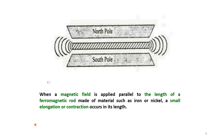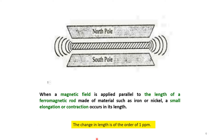The magnetostriction principle states that if a magnetic field is applied to a ferromagnetic rod made up of materials like iron or nickel, there will be a small elongation or contraction in its length. This statement is the magnetostriction effect. The change in length will be in the order of 1 ppm.